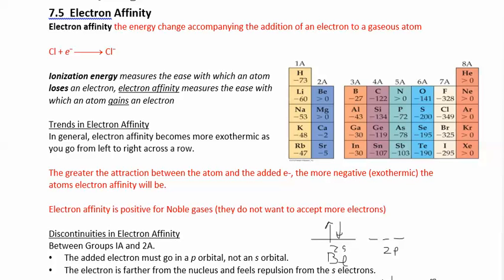Alright, electron affinity is kind of the opposite of ionization energy. In ionization energy, we were removing electrons, right? We were looking at how much energy does it cost to remove an electron, and now in electron affinity, we're capturing electrons. We're looking at the energy change when you gain an electron.